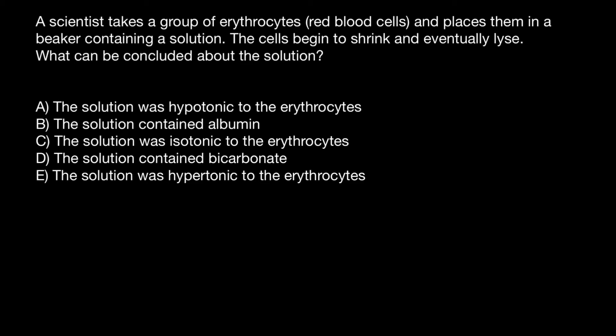Hello and welcome to Nikolai's Genetics Lessons. Today's question is: a scientist takes a group of erythrocytes, red blood cells, and places them in a beaker containing a solution. The cells begin to shrink and eventually lyse. What can be concluded about the solution? Even if you know the answer, please watch this video to the end. I'm sure you're going to learn something new today.